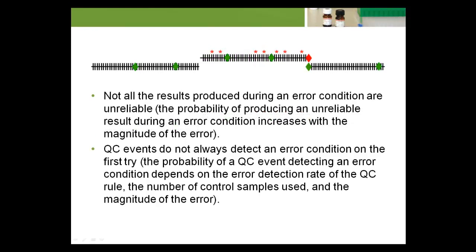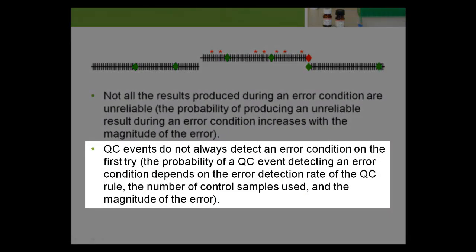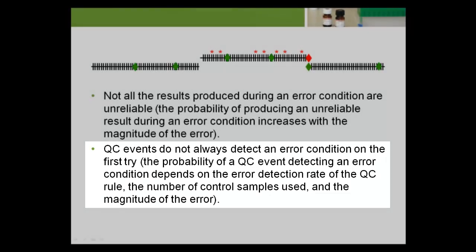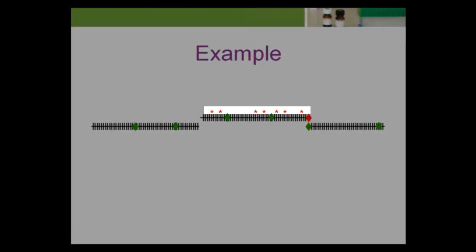Notice some of the important relationships between QC events, the number of patients tested between QC events, and the number of unreliable patient results. Not all the results produced during an error condition are unreliable. The probability of producing an unreliable result during an error condition increases with the magnitude of the error. QC events do not always detect an error condition on the first try. The probability of a QC event detecting an error condition depends on the error detection rate of the QC rule, the number of control samples used, and the magnitude of the error. If the error condition in the example was smaller, we would expect proportionally fewer of the results tested during the undetected error condition to be unreliable, but more QC events needed to detect it.